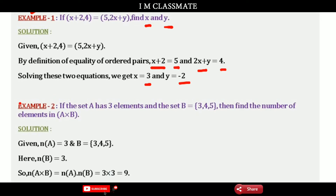Next, Example 2. If the set A has 3 elements, and the set B has elements 3, 4, 5, then find the number of elements in A cross B.